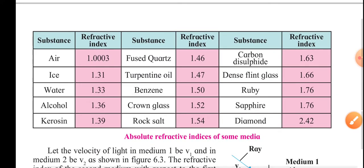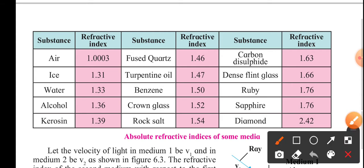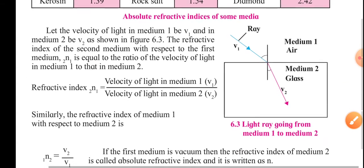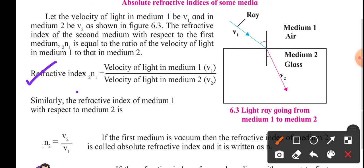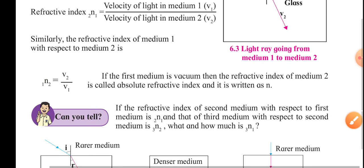A table of absolute refractive indices with respect to vacuum is provided. Air is 1.0003, ice is 1.31, water is 1.33, alcohol is 1.36, and diamond is 2.42 — which is why diamond shines so much. The refractive index can also be expressed in terms of velocities: the refractive index of medium 1 with respect to medium 2 is V1 upon V2 — the velocity of light in medium 1 divided by the velocity of light in medium 2.